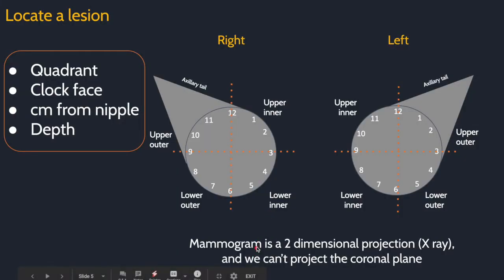Now, to locating a lesion. The goal here is to locate a lesion using these descriptors, which are useful for clinicians and surgeons and are also required for BI-RADS and ACR certification. However, we cannot image in this plane because we are limited to two-dimensional projections. Therefore, we have to use at least two projections to help triangulate lesions as best we can.